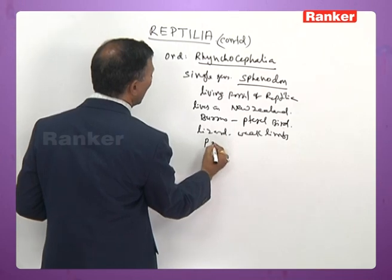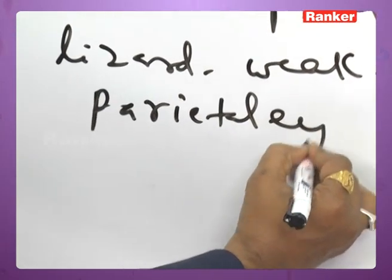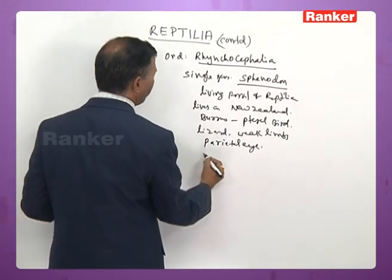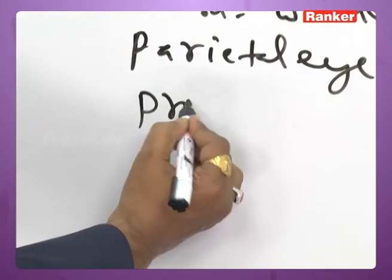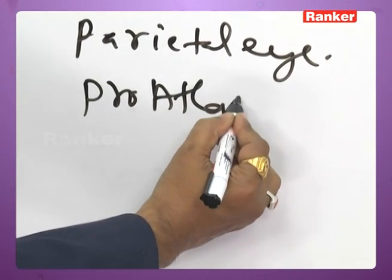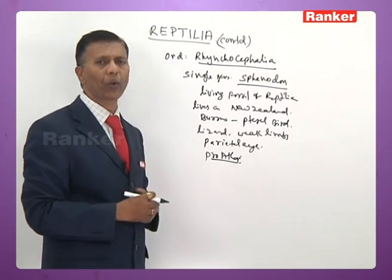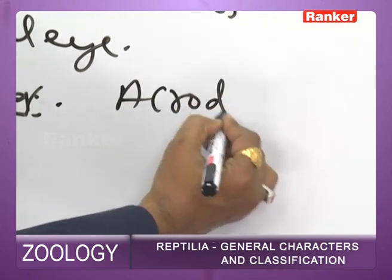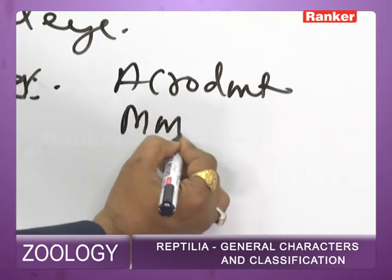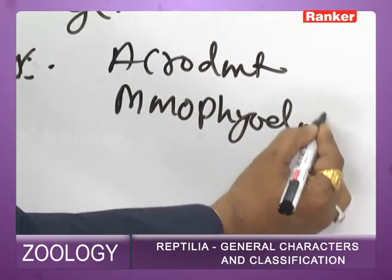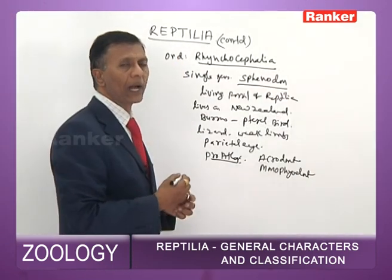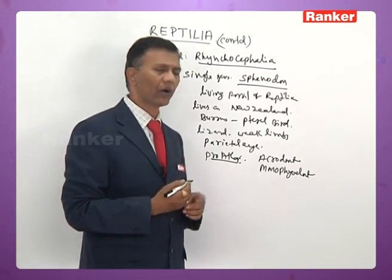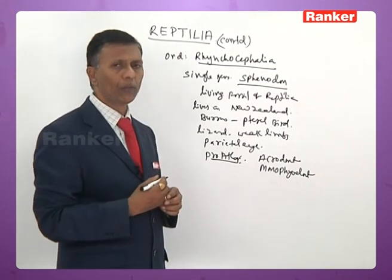Sphenodon has a parietal eye (third eye) present on the head. It also has a proatlas — a remnant of the notochord. Unlike other lizards, it has acrodont and monophyodont dentition, whereas most lizards show pleurodont and polyphyodont dentition.